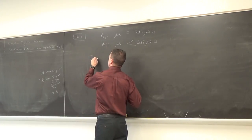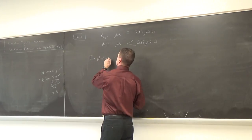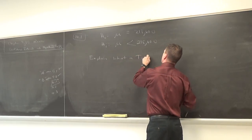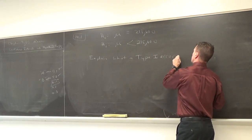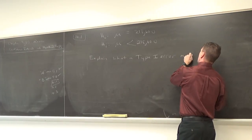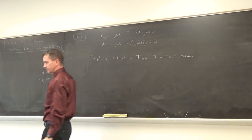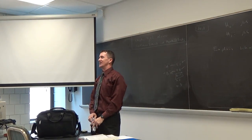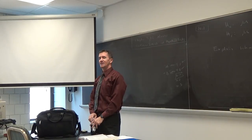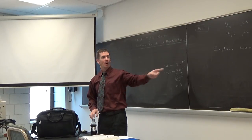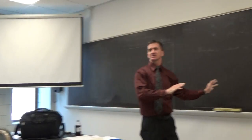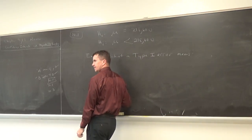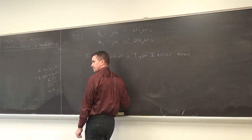There's something else they wanted you to do on this problem. We need to explain what a type one error is. Would it be okay on type one error we just explain the way you explain it? Because in the book they wrote a big love story. Absolutely. You do not have to do it like the love story. What would you say here? The H0 is true, but the researcher rejects it. Perfect. That works.